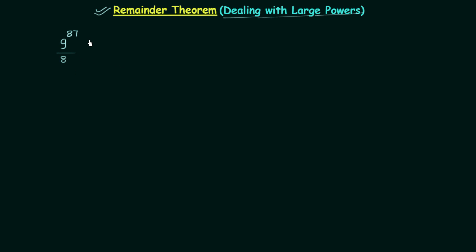Now, what if you want to calculate the remainder by first solving the numerator — that is 9 raised to power 87 — and then dividing it by 8? The calculations will be very lengthy and you will end up wasting your time. In examinations you may have powers even larger than 87, so it is good to know this simple method.